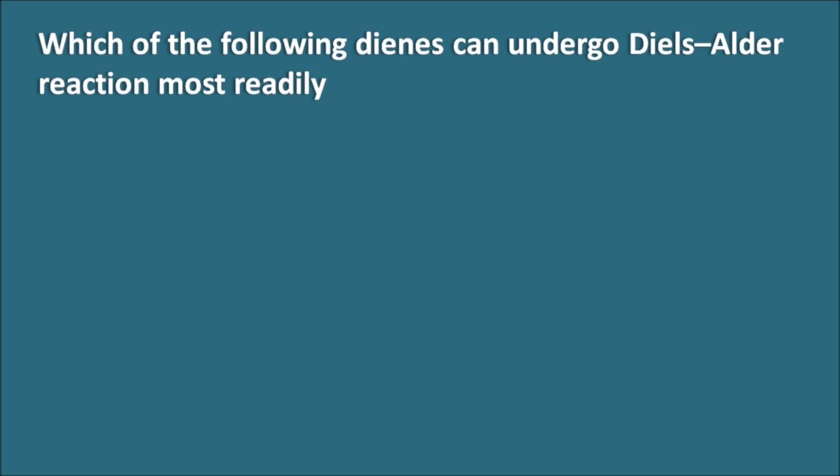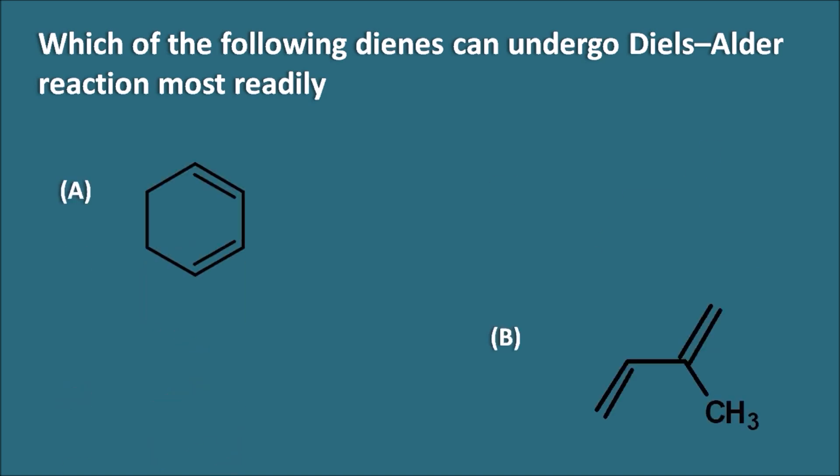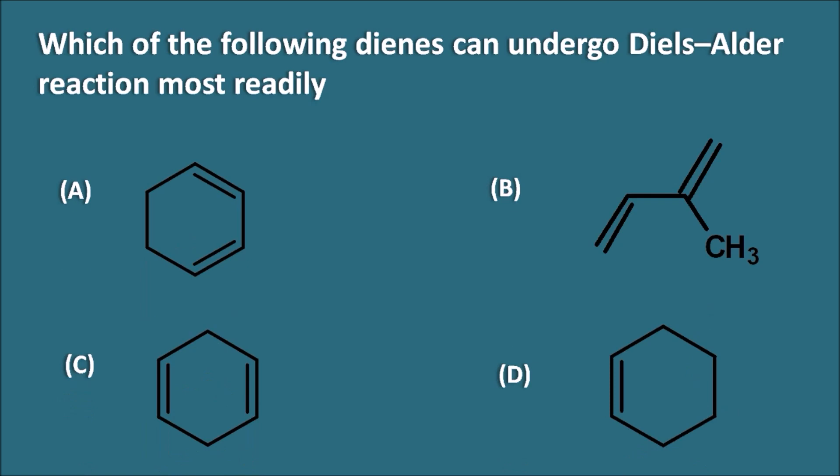The options are A, B, C, and D, where different types of dienes as well as a monoalkene are given as the options. The right answer for this question is option A.